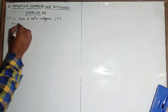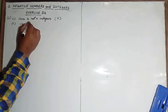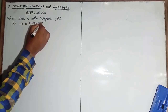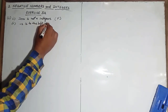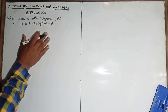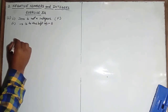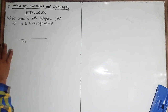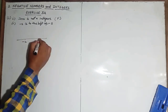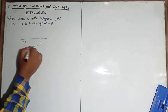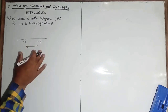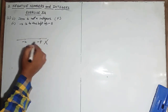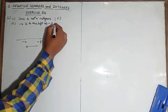Second statement is: 'Minus two is to the left of minus five.' Is it true that minus two is to the left of minus five? No, it is wrong. We know that minus two will be to the right of minus five on the number line, so it is again a false statement.